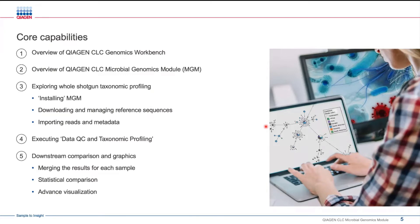Within the MGM module, we're going to explore whole shotgun taxonomic profiling. To do this, we're going to go through the installation of the MGM because it is a plugin, talk about how we can easily download and manage references within the workbench specifically for taxonomic profiling, and then get the data into the application — reads in the form of FASTQ and metadata.